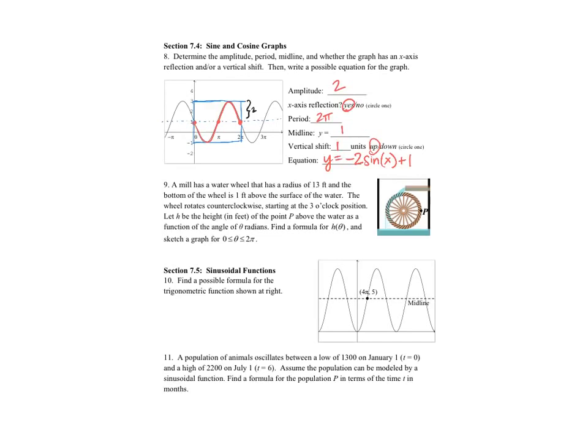Okay. The next one says a mill has a water wheel that has a radius of 13 feet. And the bottom of the wheel is 1 foot above the surface of the water. The wheel rotates counterclockwise starting at 3 o'clock. Let h be the height of a point p above the water as a function of the angle theta radians. Find a formula for h of theta and sketch a graph from 0 to 2 pi radians.